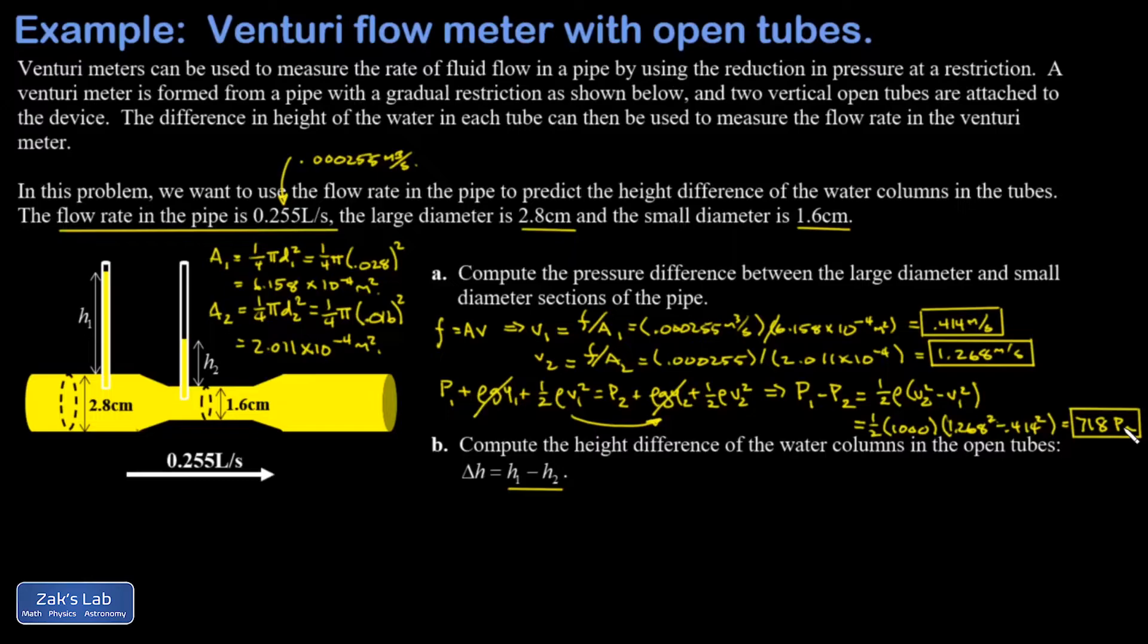Finally I want to get the height difference of the two water columns in these open tubes. At the top of each water column I have atmospheric pressure. If I travel downward through this first water column until I get to this point inside the pipe, that's P1.